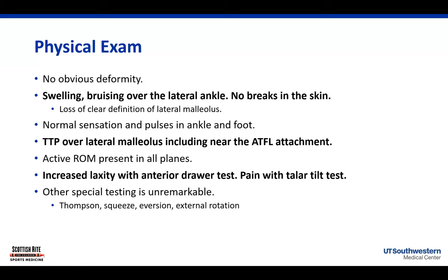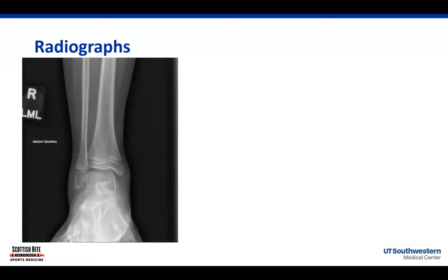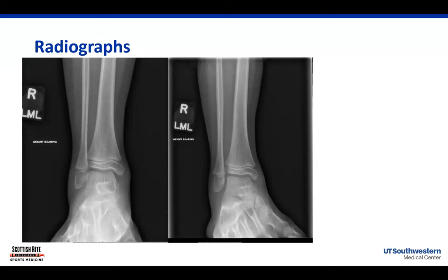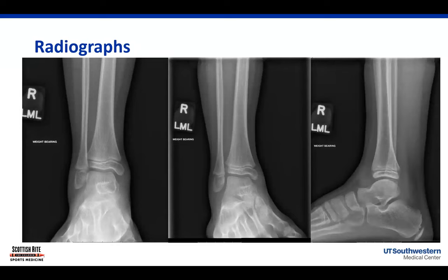We got radiographs - three views: an AP weight-bearing view, a mortise view, and a lateral view. We can tell this patient is skeletally immature based on the presence of her physis at the distal fibula and distal tibia. We assess it as appropriate bone age for someone about eight years old. We don't see any evidence of significant fracture - at least no acute displaced fracture - and maybe a little bit of soft tissue swelling over the lateral ankle. Nothing major as far as bone fracture goes.